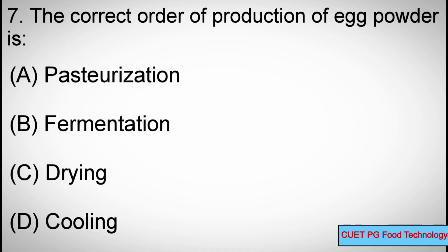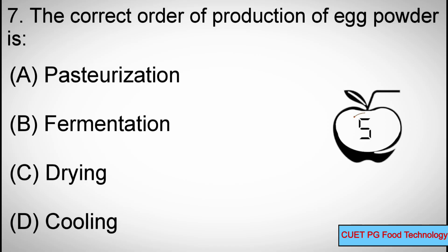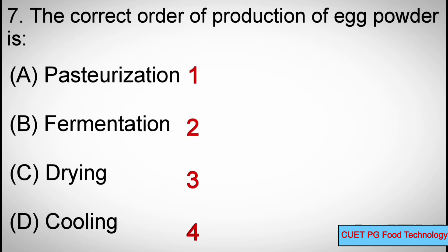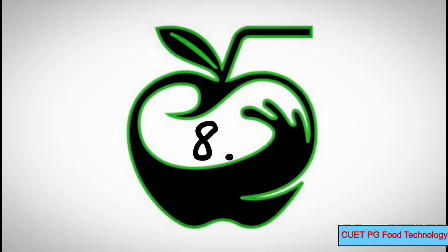Question number seven: The correct order of production of egg powder is — options: A) Pasteurization, B) Fermentation, C) Drying, D) Cooling. The correct order is: Pasteurization, then Fermentation, then Drying, then Cooling.